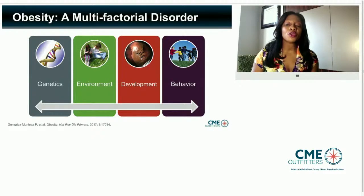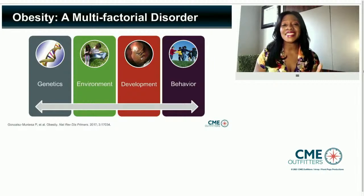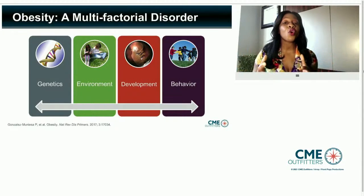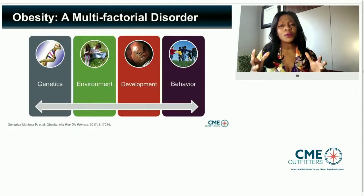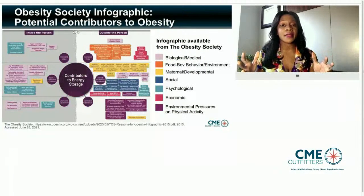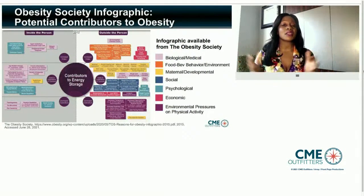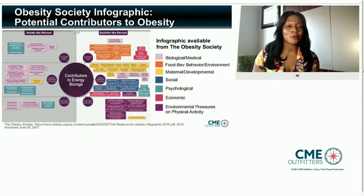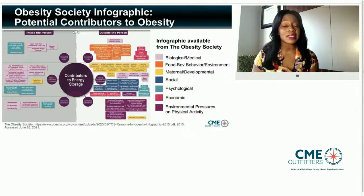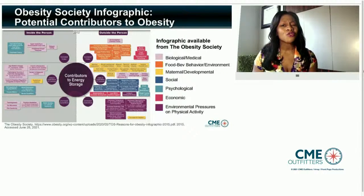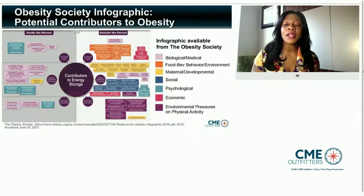What we do know about obesity is that it is a multifactorial disorder where genetics, environment, development, and behavior all play a role in a person's likelihood of having this disease. This next slide comes out of the Obesity Society in 2015, and really shows you all the potential factors that may play a role in someone having the disease of obesity.